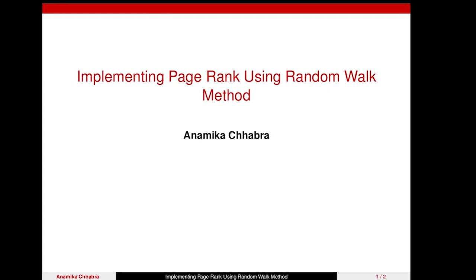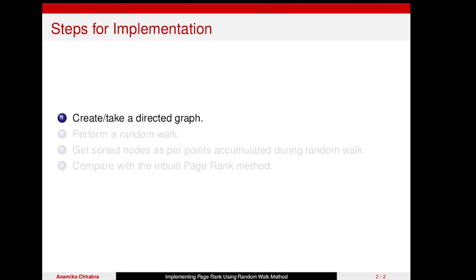Now let's look at the steps we are going to implement. As in the previous case, we are going to take a directed graph — either using a NetworkX generator function or creating it ourselves. We created one in the previous video, so we'll reuse that code. The second and main step is performing the random walk as just explained.